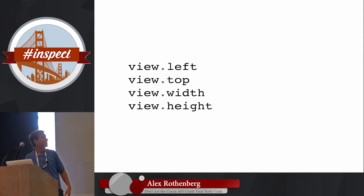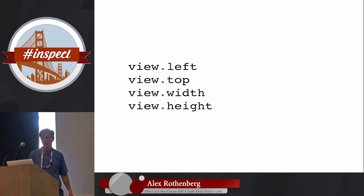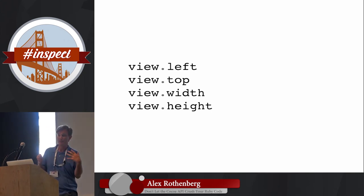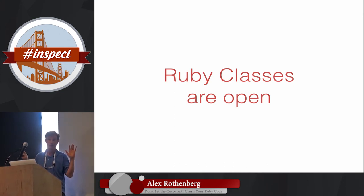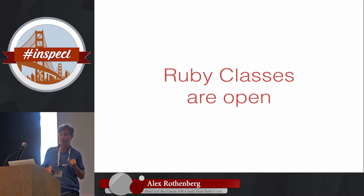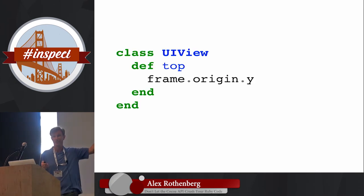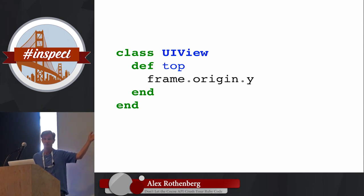What I wanted to do was not have these little mini train wrecks scattered throughout my code, but just ask the view: what's your top, what's your left? Something simple like that. This was my next revelation: in Ruby, classes are always open. So we could just monkey patch UIView — if we want a top method, we can just give ourselves a top method. Something nice and easy to work with.